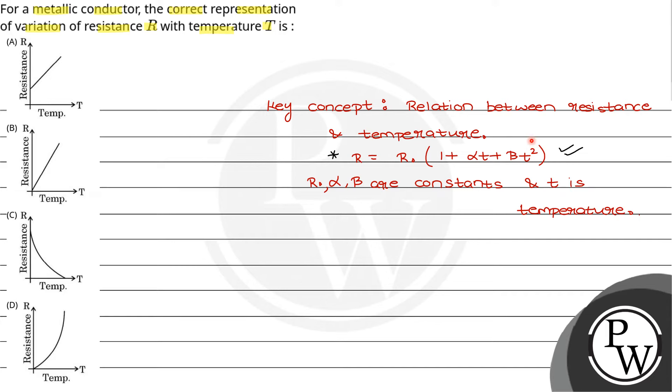Alright, basically here the maximum highest power is 2, right? So here is basically R₀(1 + αT + βT²).